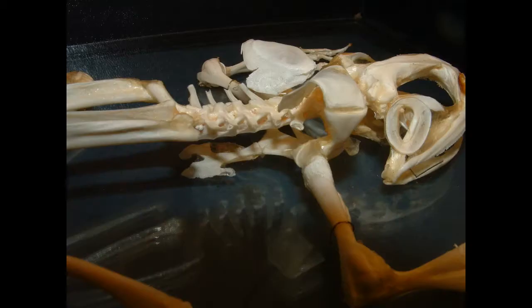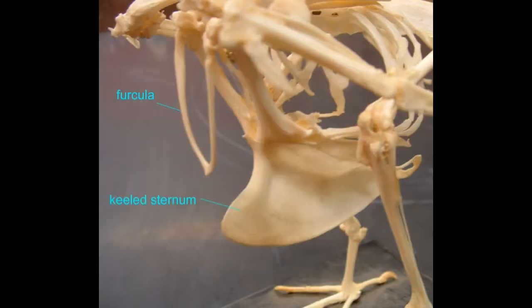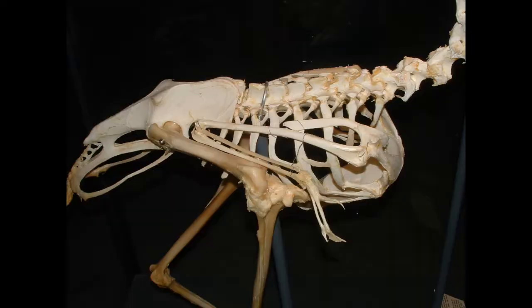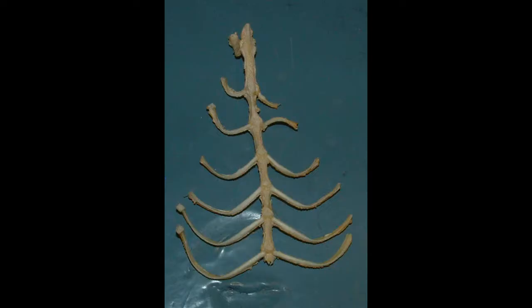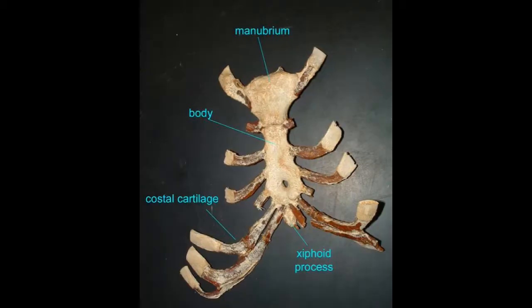The sternum evolved in the earliest tetrapods and has been modified in different lineages. The keeled sternum in modern birds is an adaptation for enlarged flight muscles. In mammals, it is composed of a series of elements, as in the mink. In humans, it is composed of the manubrium, body, and xiphoid process.